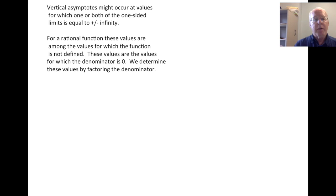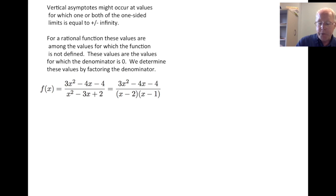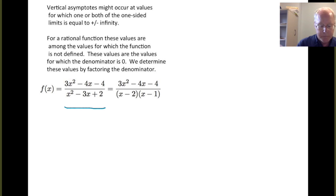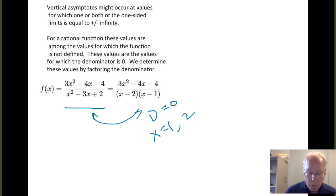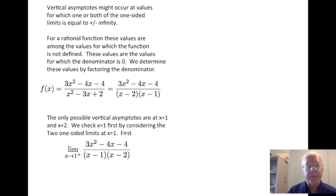Vertical asymptotes might occur at values for which one or both of the one-sided limits is equal to plus or minus infinity. For rational functions, these values are among the values for which the function is not defined — that is, the values for which the denominator is zero. We can determine these values by factoring the denominator. The denominator x squared minus 3x plus 2 factors as x minus 1 times x minus 2, so f of x is not defined at x equals 1 and x equals 2. The only possible vertical asymptotes are at x equals 1 and x equals 2.